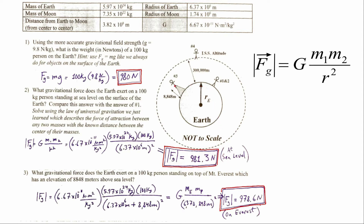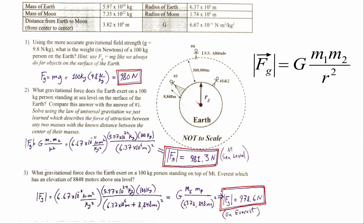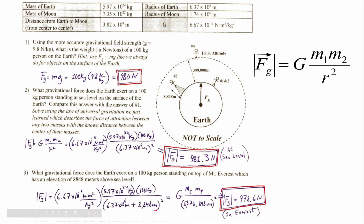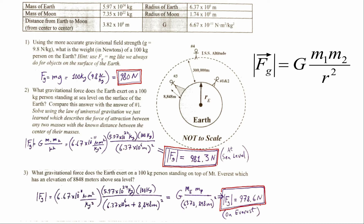In number 3, you figure out how big the attraction is when that person is standing a little farther from the Earth at the elevation of Everest. The masses stay the same, but they're now separated by a greater distance. The distance between the center of the person and the center of mass of the Earth is now the radius of the Earth plus the elevation of Everest — 6.37 times 10 to the 6 meters plus 8,848 meters — squared. This gives a force of about 978.6 Newtons, a little smaller than at sea level.